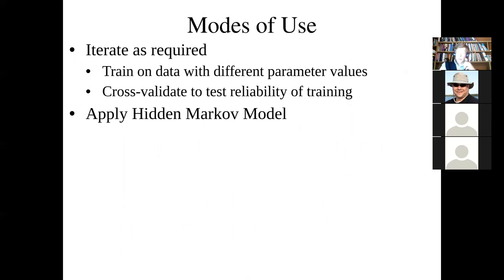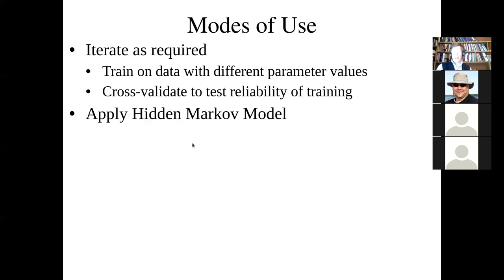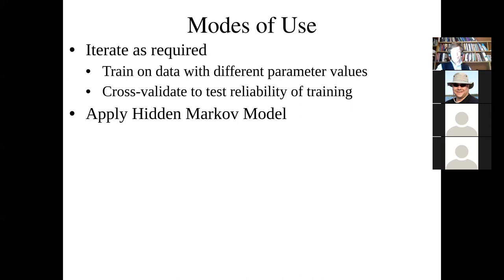There are two ways we use hidden Markov models: a supervised way and an unsupervised way. Generally, we want to train the model and then apply it — or more precisely, train it, test it, and then apply it. We train it, we test it, and then the model is formulated and we apply it repeatedly.